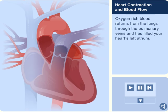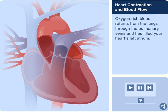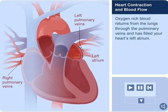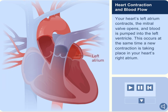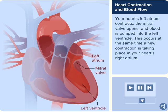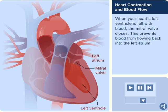Oxygen-rich blood returns from the lungs through the pulmonary veins and fills your heart's left atrium. Your heart's left atrium contracts. The mitral valve opens and blood is pumped into the left ventricle. This occurs at the same time a new contraction is taking place in your heart's right atrium. When your heart's left ventricle is full with blood, the mitral valve closes. This prevents blood from flowing back into the left atrium.